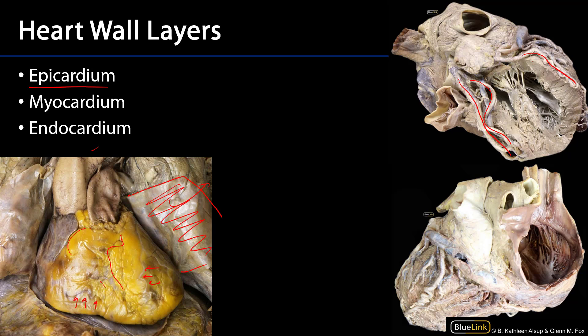More importantly, we can see a very robust myocardium. The myocardium is the muscular layer of the heart. This is what allows the heart to relax and, probably more importantly, contract — going through periods of diastole and systole — to really serve as a pump for the blood.